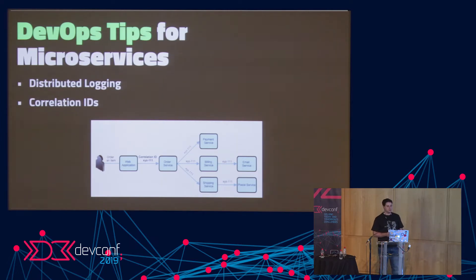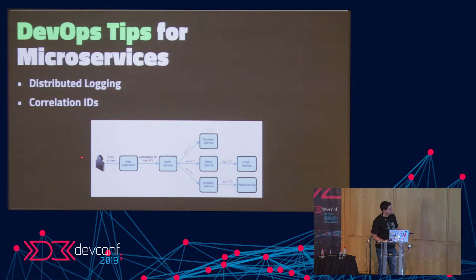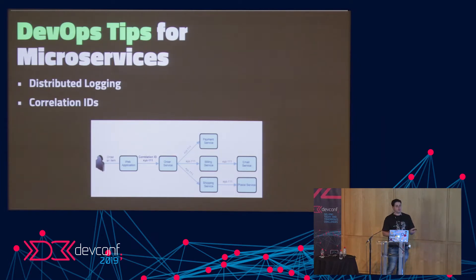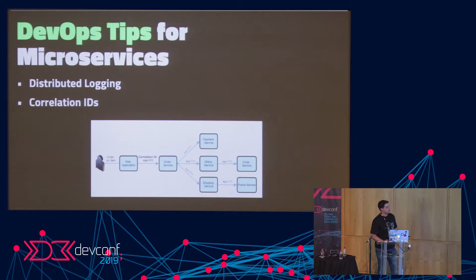To track a flow — say a user places an order, it goes to the front end, then to an order service, billing service, payment service — you attach a correlation ID to the particular transaction in your microservice. Then all the other logs will have that transaction ID. So if something failed, you can go back and look up that correlation ID to trace the full flow.